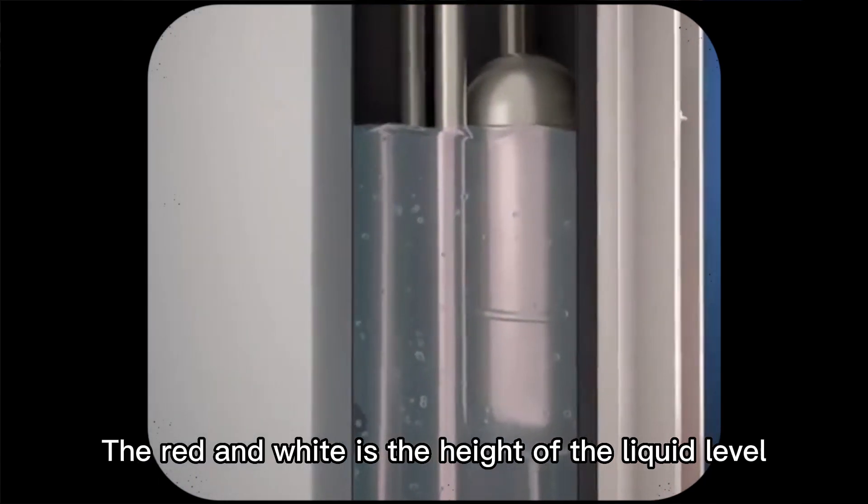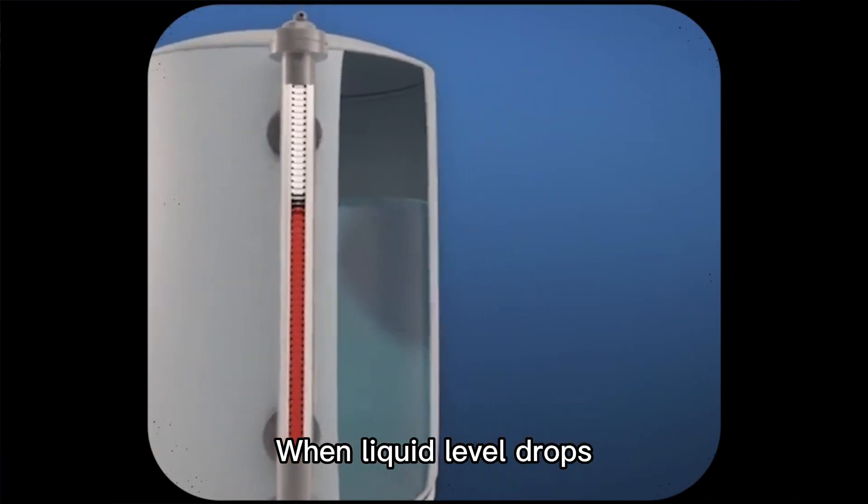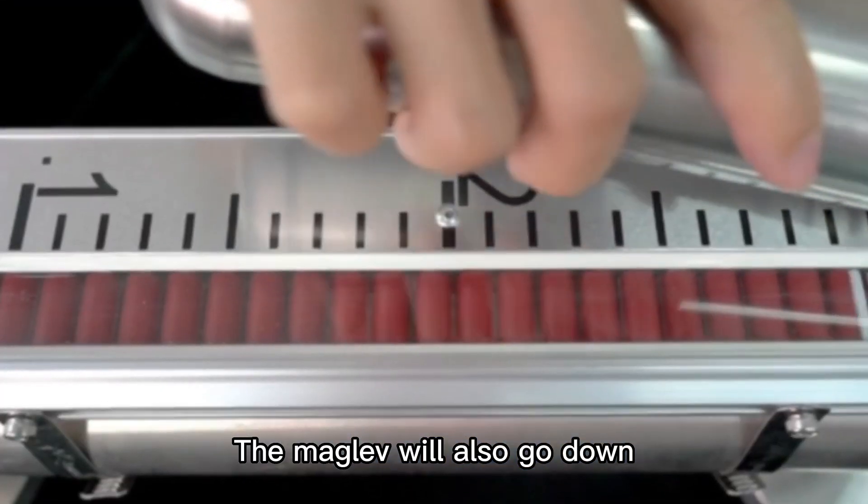The red and white indicates the height of the liquid level. When the liquid level drops, the maglev will also go down.